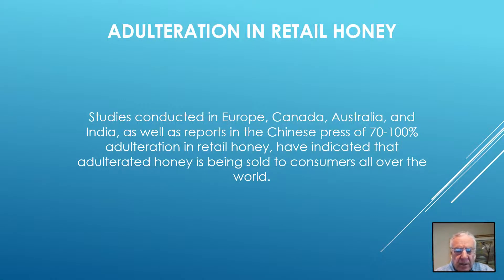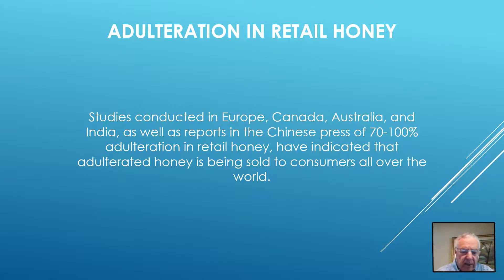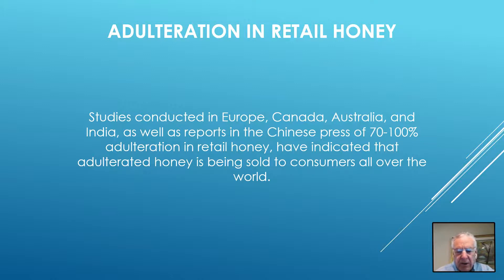Adulteration in Europe, Canada, Australia, and India, as well as numerous reports in the Chinese press, have indicated that adulterated honey is being sold to consumers all over the world. In the United States, anti-dumping duties resulting in a number of prosecutions charged honey importers with criminal activity and collusion of packers and exporters, creating what was called Honeygate — described as the largest instance of food fraud in the history of the United States.